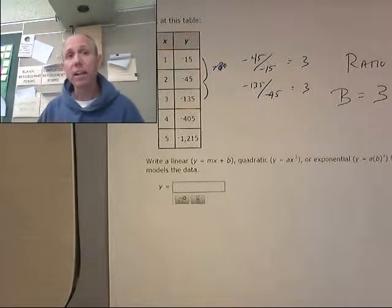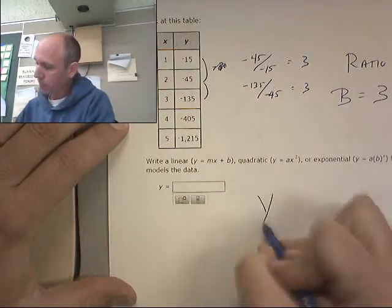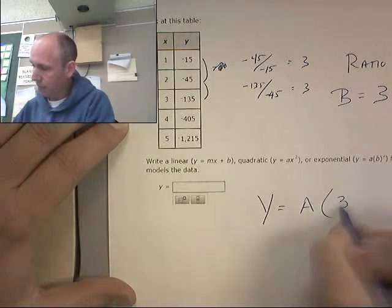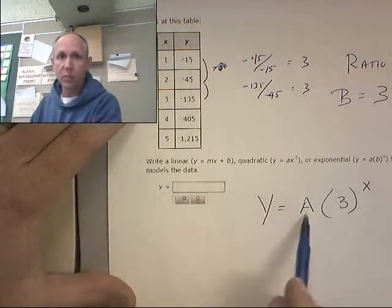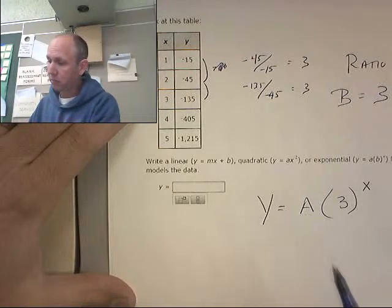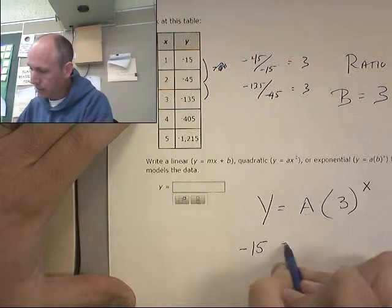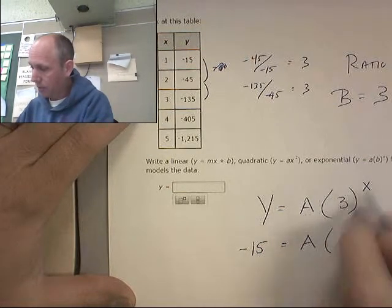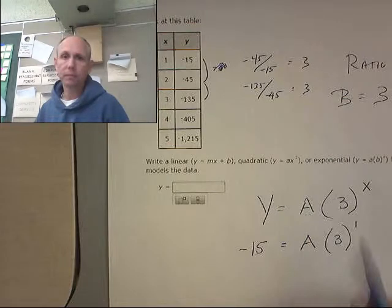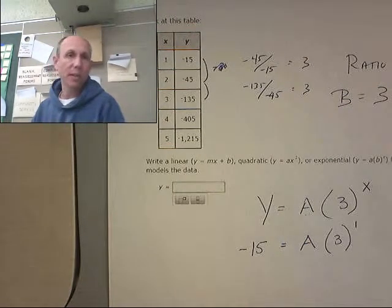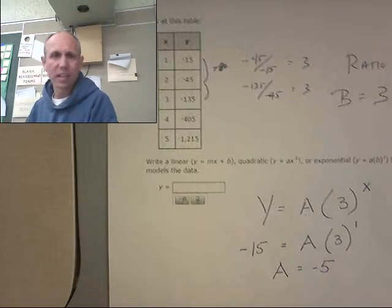Now, once again, how do I find that a value? Well, you know, there's another way to do this. Y equals a, b to the x. We could plug in any of these values here for x and y and solve for a. Actually, I like that idea. Let's do that. Let's plug in x and y. Y is negative 15 equals a, my unknown, 3 raised to the first. Let's solve that. 3 to the first is 3. Divide both sides by 3. Looks like a is negative 5.